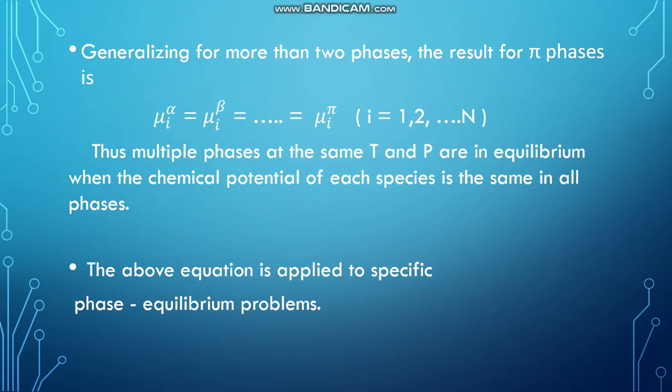Multiple phases at the same temperature and pressure are in equilibrium when the chemical potential of each species is the same in all phases. So chemical potential must be the same in all phases for multiple phases to be in equilibrium.